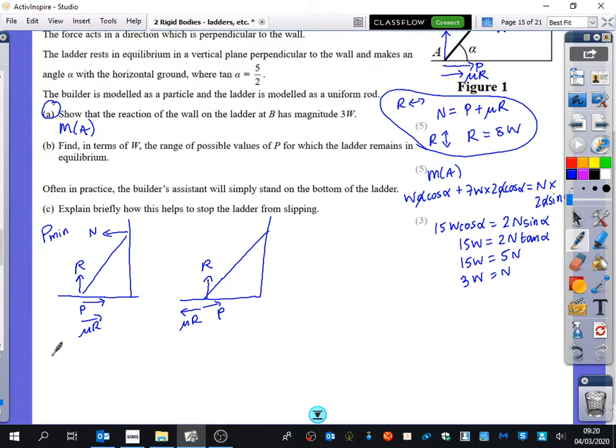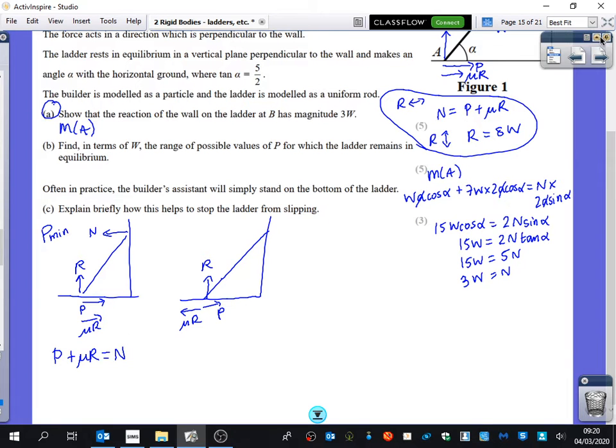For the P minimum, we get that P minimum plus mu R is equal to N. Did they tell us what mu was? Is it a quarter? I'll just double check. Yep, it's a quarter. So here we get that P equals N minus a quarter R.